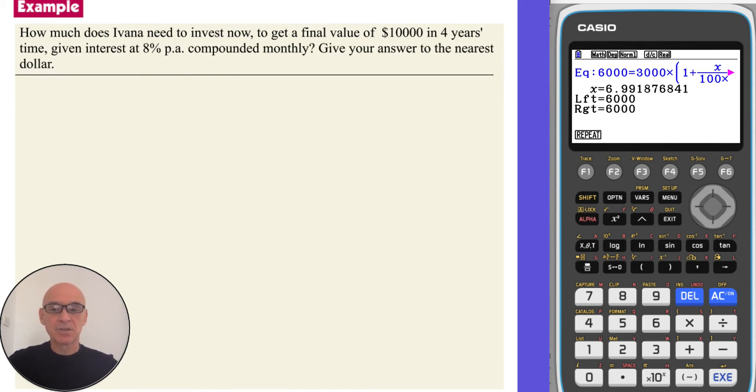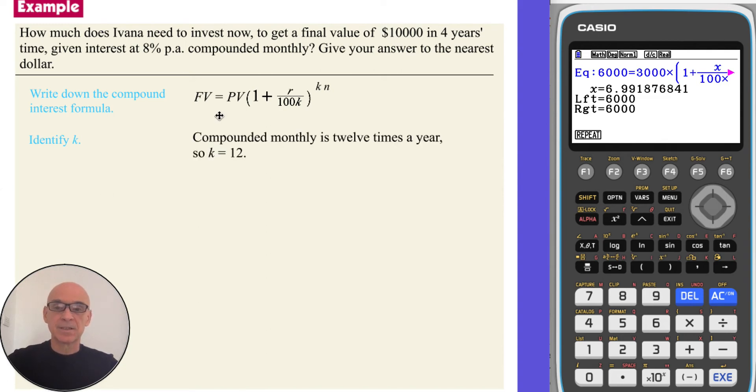In this question, we're asked to find how much Ivana needs to invest now to get a final value of $10,000 in four years' time. If we start by writing down the compound interest formula and identifying K, the number of compounds per year. And since the interest is compounded monthly, which is 12 times a year, then K is equal to 12. Next, if we state a final value FV of 10,000, an interest rate of 8%, a duration N of four years, and that K is 12. If we substitute the values into the formula, forming an equation in PV, present value. We can use Solver on the calculator to find PV.